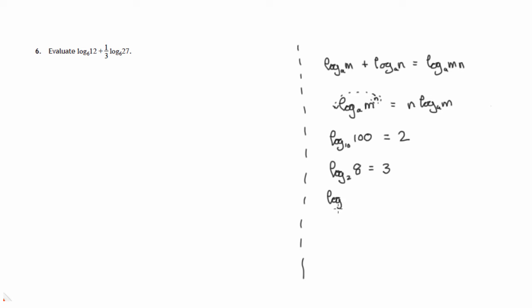What power do you raise 2 to to get square root of 2? The answer is a half. 2 to the power of a half is the square root of 2. What power do you raise 3 to to get 81? The answer is 4. So all of these can be worked out by reading them in a special way.